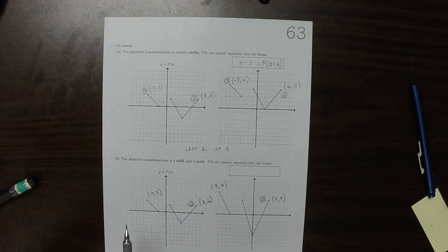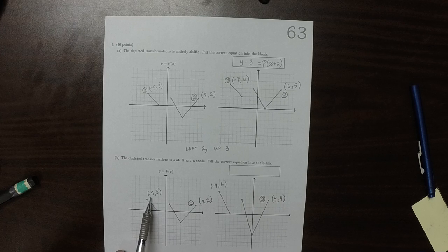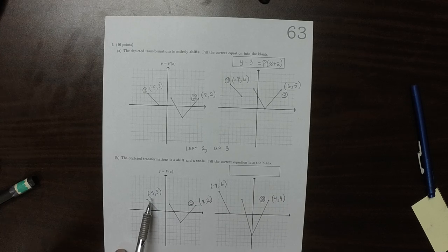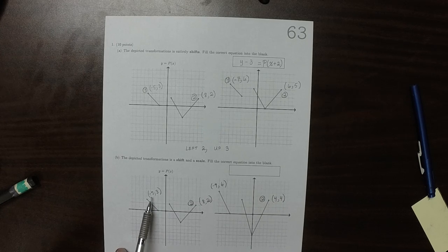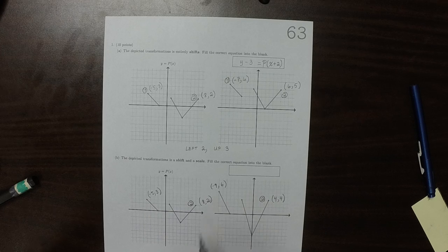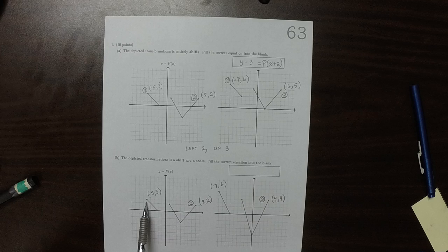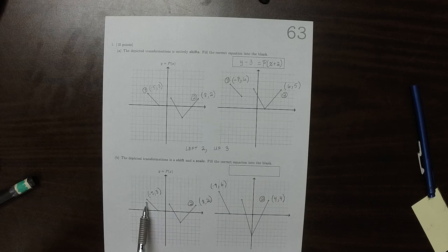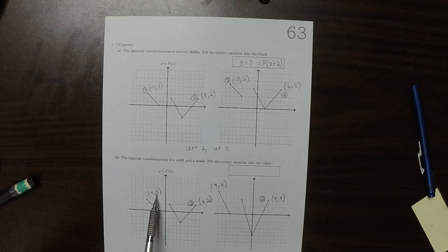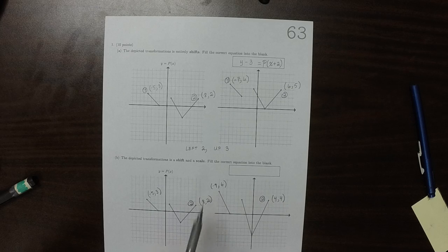So let's see. If we took this point, negative 5, 3, and we shifted it left 4, then that negative 5 would become negative 9. So that agrees. And if we were to vertically stretch it by 2, that 3 would become a 6. So that agrees.